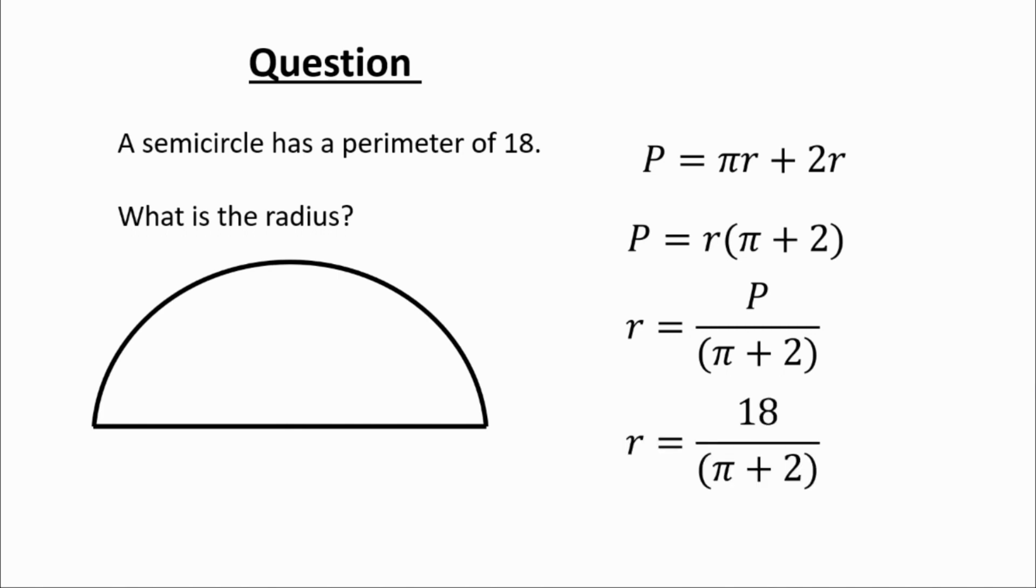So we replace the p which stands for perimeter with 18. So you're doing 18 divided by π + 2 and if you put that into your calculator carefully making sure that you've got brackets or using the fraction button to make sure that you're doing it in the correct order you should get 3.5.